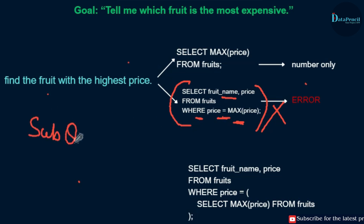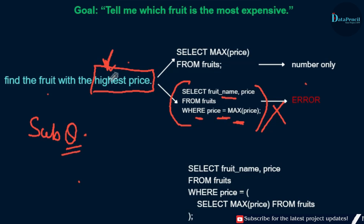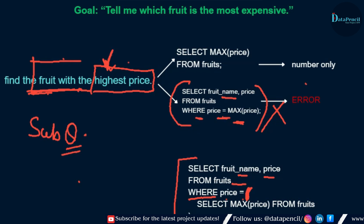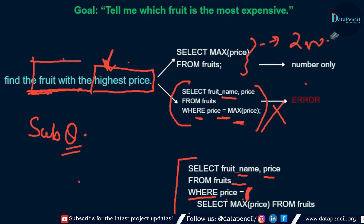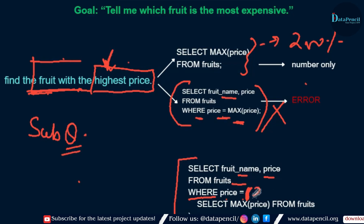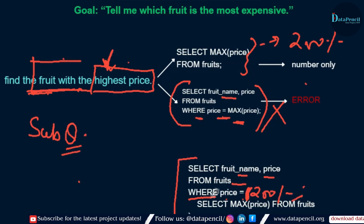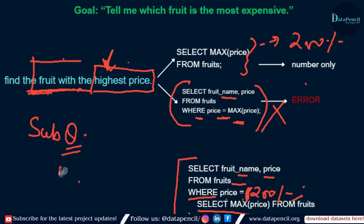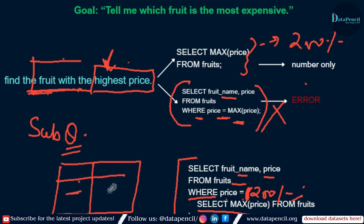This is where the subquery comes into the picture. First we find the max price — this will be our subquery — and we put it inside our main query. The main query selects the fruit name. So we write: SELECT fruit_name, price FROM fruits WHERE price = (SELECT MAX(price) FROM fruits). Suppose the max price is 200; the subquery returns 200, and the WHERE clause becomes WHERE price = 200. The result window shows the fruit name and its highest price.